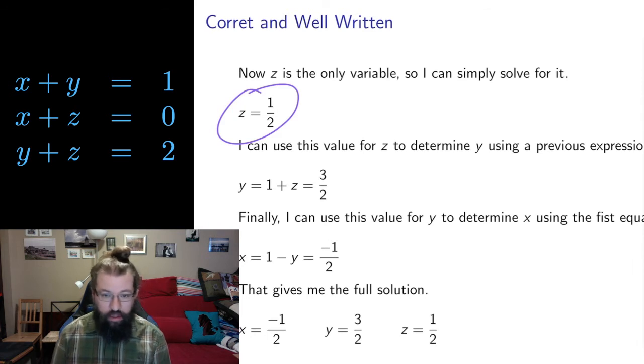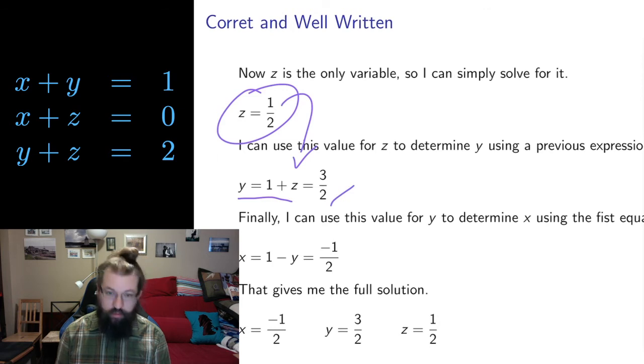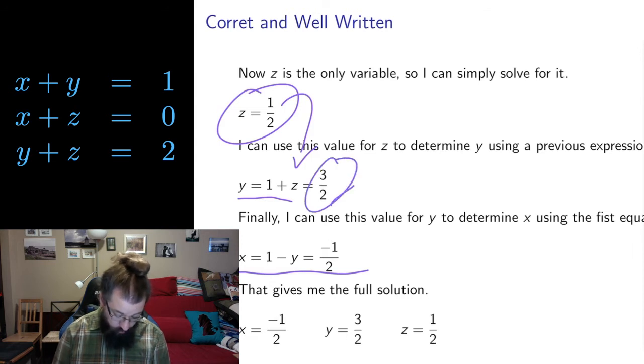And then I can put that in the previous expression I had involving y and z. That y equals 1 plus z. This is one of the things I had on the previous page. So I can put this 1 half in there. So 1 plus 1 half is 3 halves. And then I can use the first equation again to solve for x in terms of y. So x is 1 minus y. I know y is 3 halves. So I get that x is 1 minus 3 halves is negative 1 halves. And that gives me, in fact, the full solution.